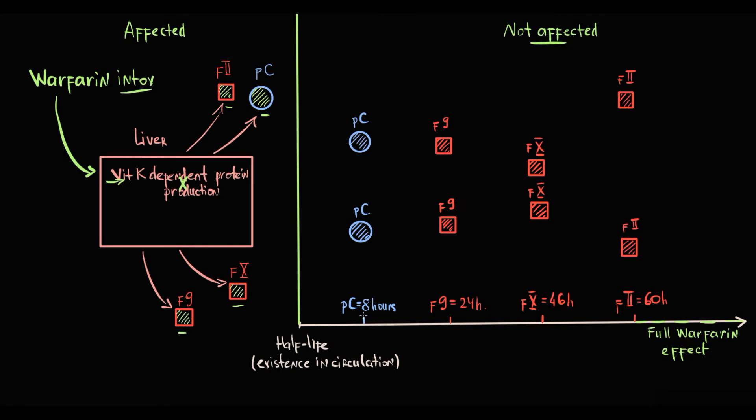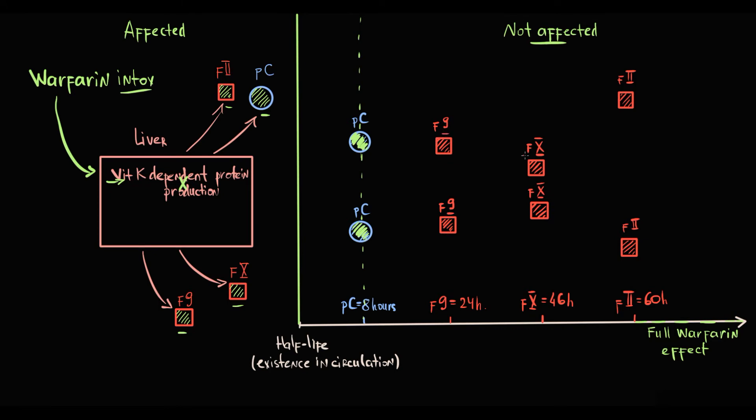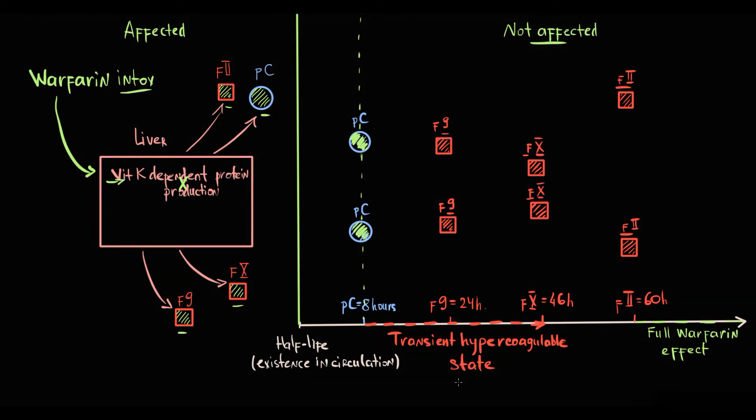The half-life of protein C is 8 hours. And after 8 hours, there will be no normal protein C in the blood, just broken protein C that does not have anticoagulant activity. But pro-coagulative proteins such as factor 9, 10, and 2 will still be present, and this creates the so-called transient pro-coagulative state. And this pro-coagulative state will last approximately 36 hours.